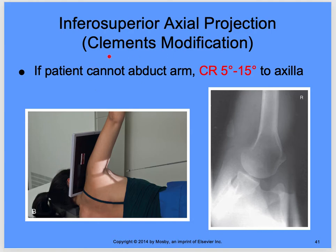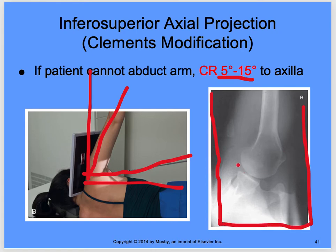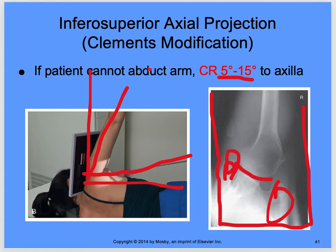If the patient cannot abduct the arm to form 90 degrees — say they're only at 35 or 40 degrees — that's when the angle comes in: 5 to 15 degrees into the axilla. You're still imaging that glenoid humeral cavity. You should see the coracoid, the acromion, the clavicle, and the glenoid humeral cavity. If they cannot abduct the arm, angle 5 to 15 degrees into the axilla.